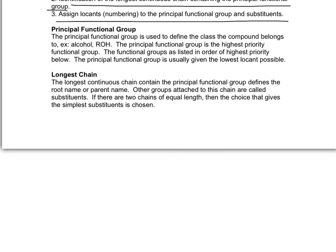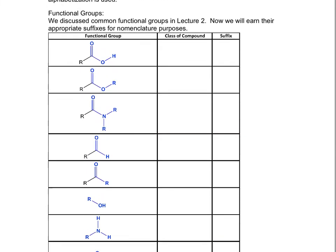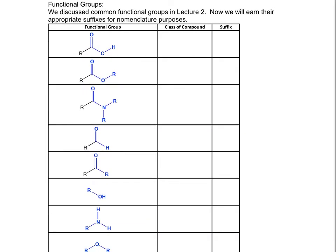Below I have definitions, and I'm not going to go through them right now. Let's look at what the functional groups are and how they're ranked from highest priority to lowest priority. Here we have the highest priority, and at the bottom of the table we have the lowest priority. I'm going to go through these functional groups, but you should know them already.